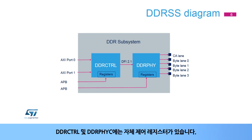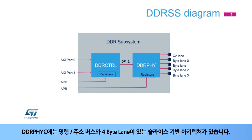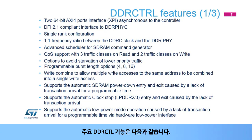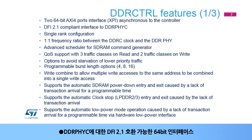DDRCTRL and DDRPHYC have their own control registers. DDRCTRL is connected to the SOC backbone by two AXI ports. DDRPHYC has a slice-based architecture with a command address bus and four byte lanes. The main DDRCTRL features include two 64-bit AMBA4 AXI-4 port interfaces, or XPI, asynchronous to the controller, and a 64-bit DFI 2.1 compliant interface to DDRPHYC.